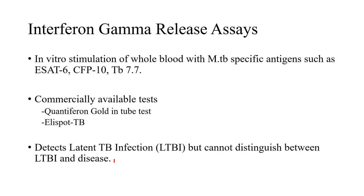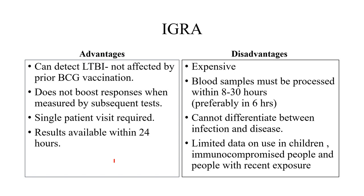IGRA advantages: detects latent TB infection, not affected by prior BCG vaccination, does not boost responses on repeat testing, and requires only a single patient visit — blood sample results available within 24 hours. Disadvantages: costs 2,000-3,000 rupees, blood must be processed within 8-30 hours, cannot differentiate between infection and disease, and limited data in children and immunocompromised individuals. Basically it is a test only for looking for latent infection.